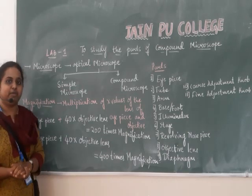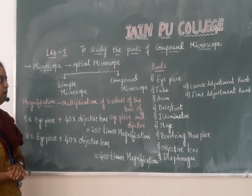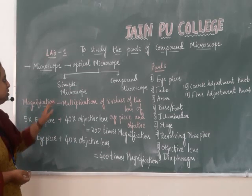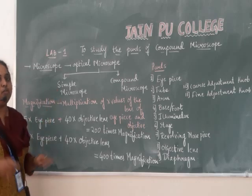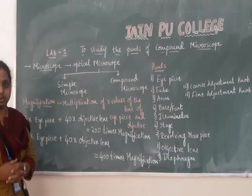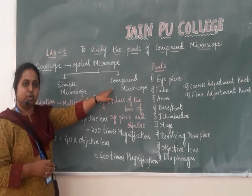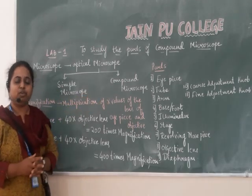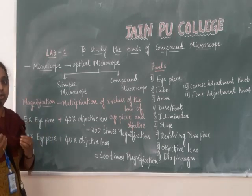The difference between a simple microscope and a compound microscope is that in a simple microscope, only one lens is used, whereas in a compound microscope, we will be making use of more than two lenses.